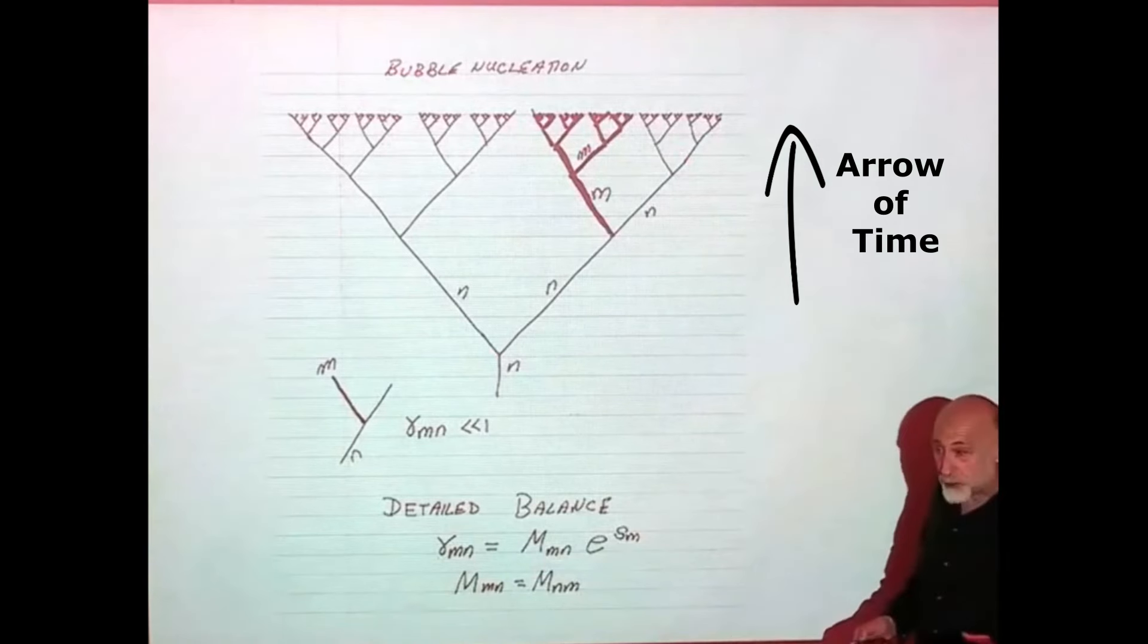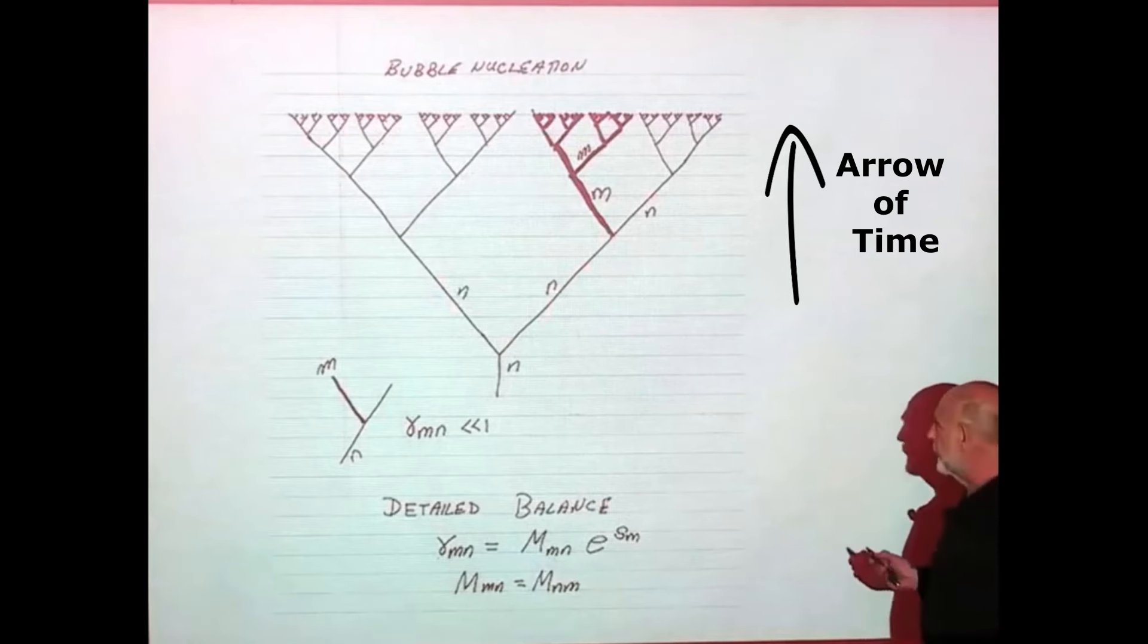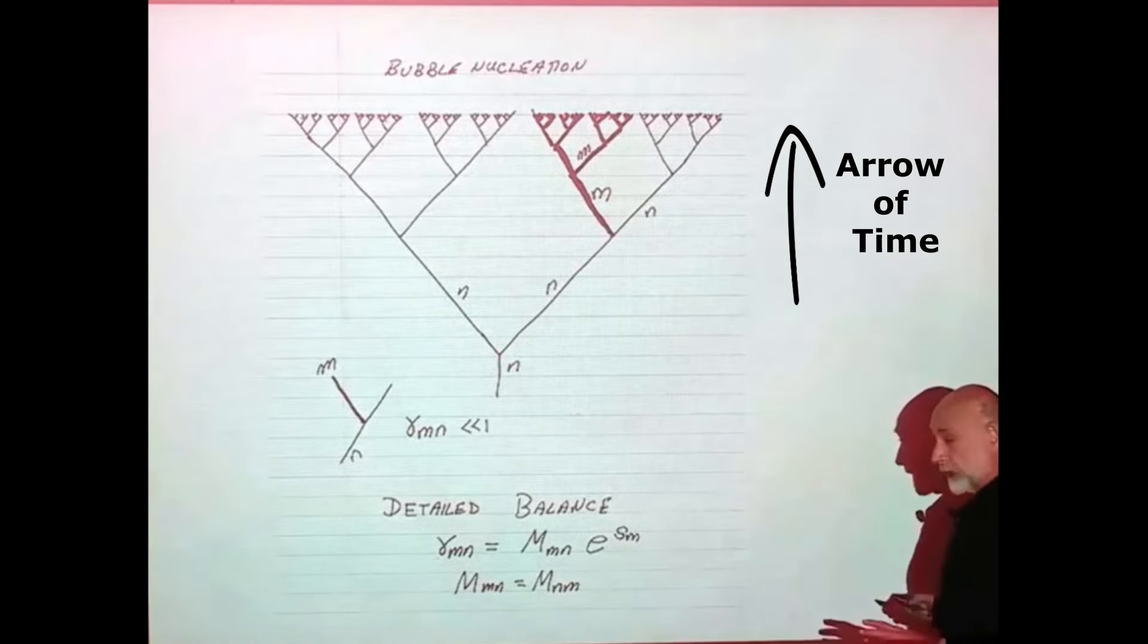Now, of course, what we're going to be interested in is the population statistics of n's and m's, so it wouldn't be too interesting from that point of view if there was only one minimum. n labels a particular minimum, a particular point on the landscape if you like.